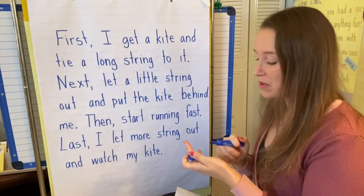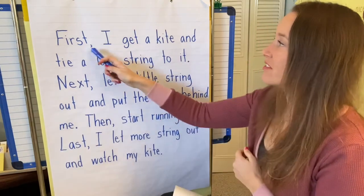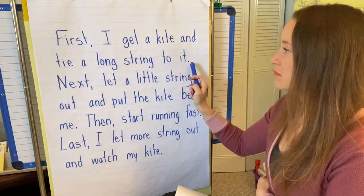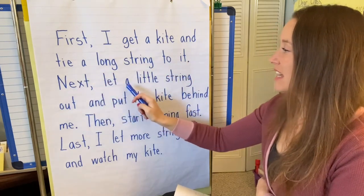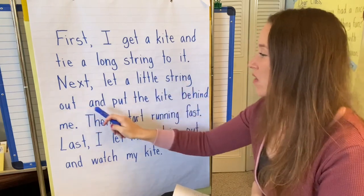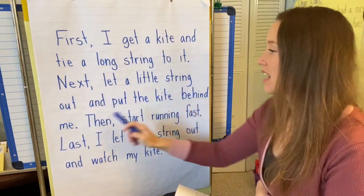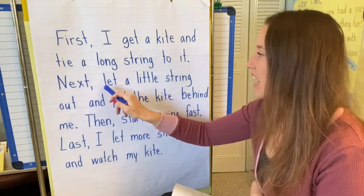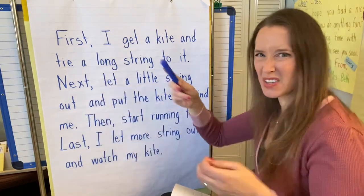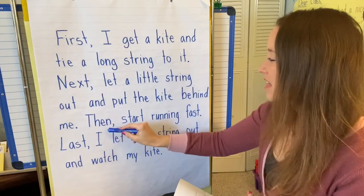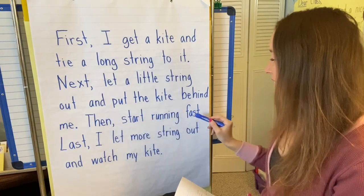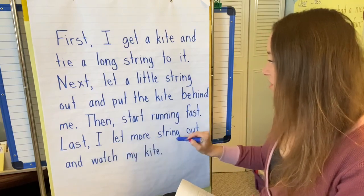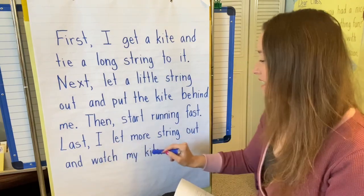Okay, so that was how to fly a kite. First, I get a kite and tie a long string to it. Period. Next, I let a little string out and put the kite behind me. Period. Then start running fast. Period. Last, I let more string out and watch my kite. Period.